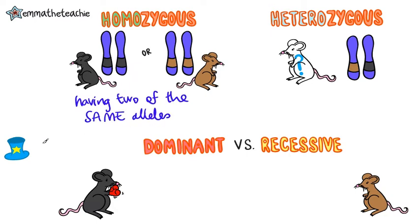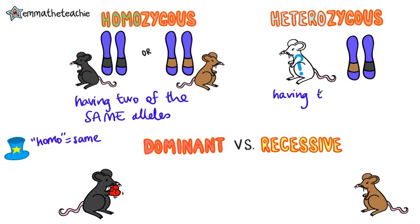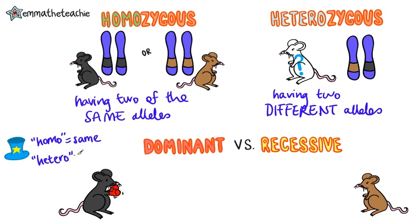Here's a hint: you might have heard the word homosexual — when a person is attracted to the same gender as themselves — so 'homo' simply means same. What then do you think heterozygous might mean? Heterozygous means having two different alleles. By the same token, being heterosexual means a person is attracted to a different gender than themselves, so 'hetero' just means different.